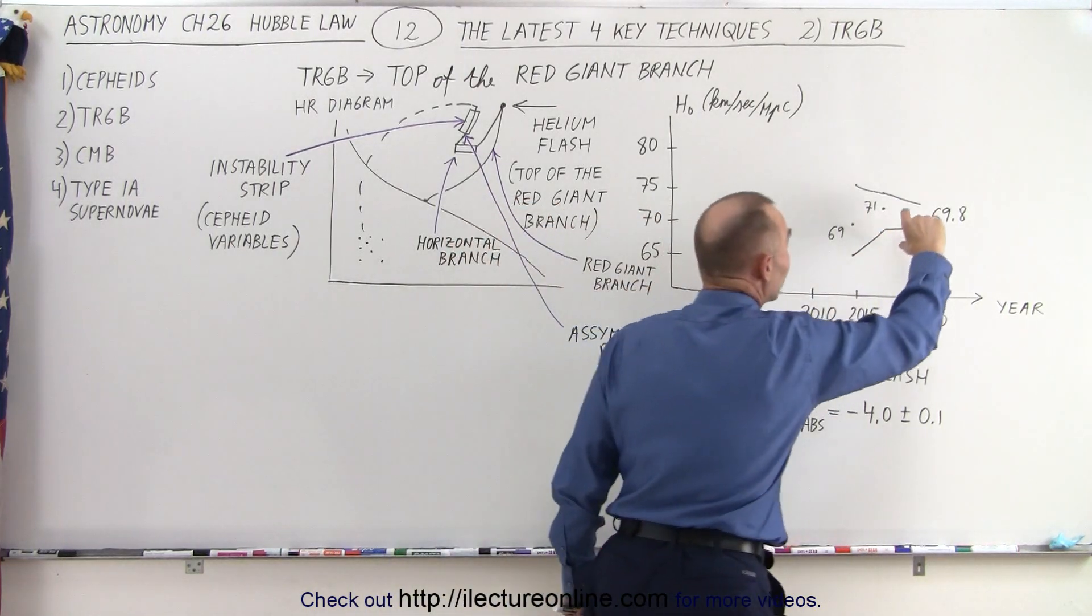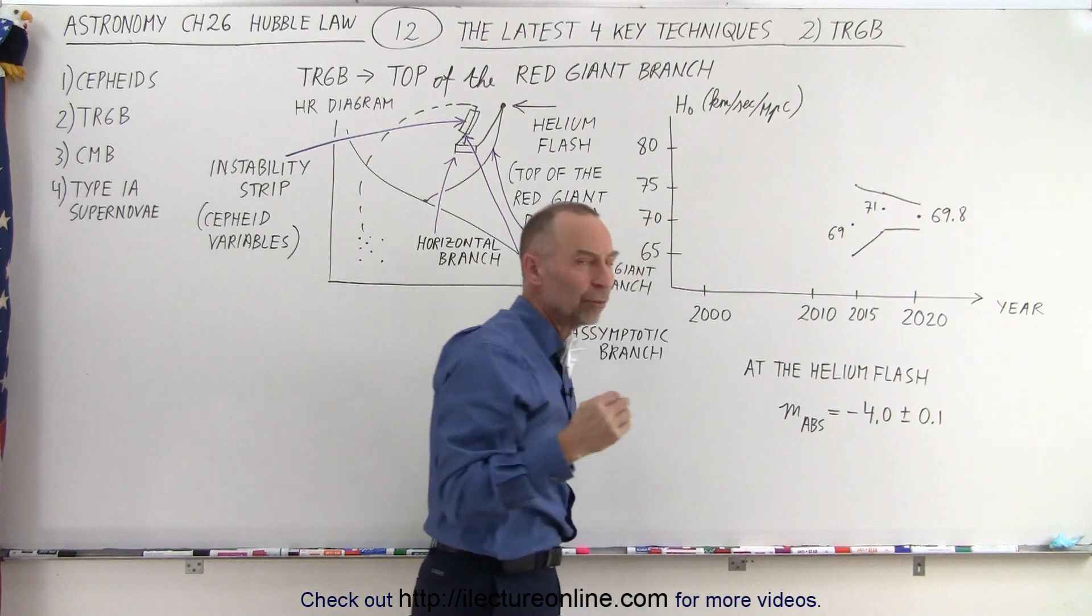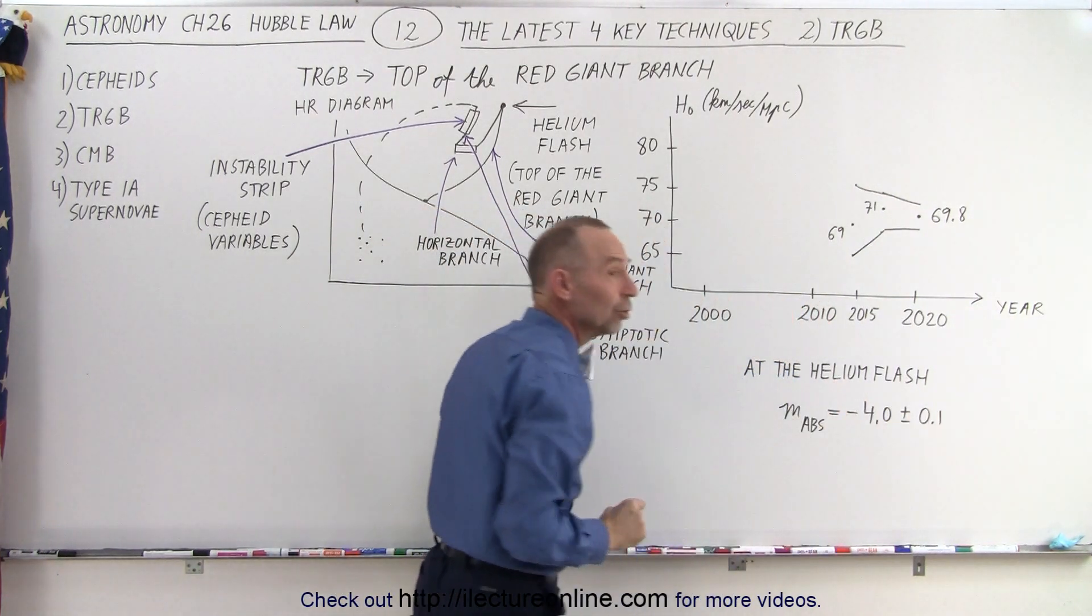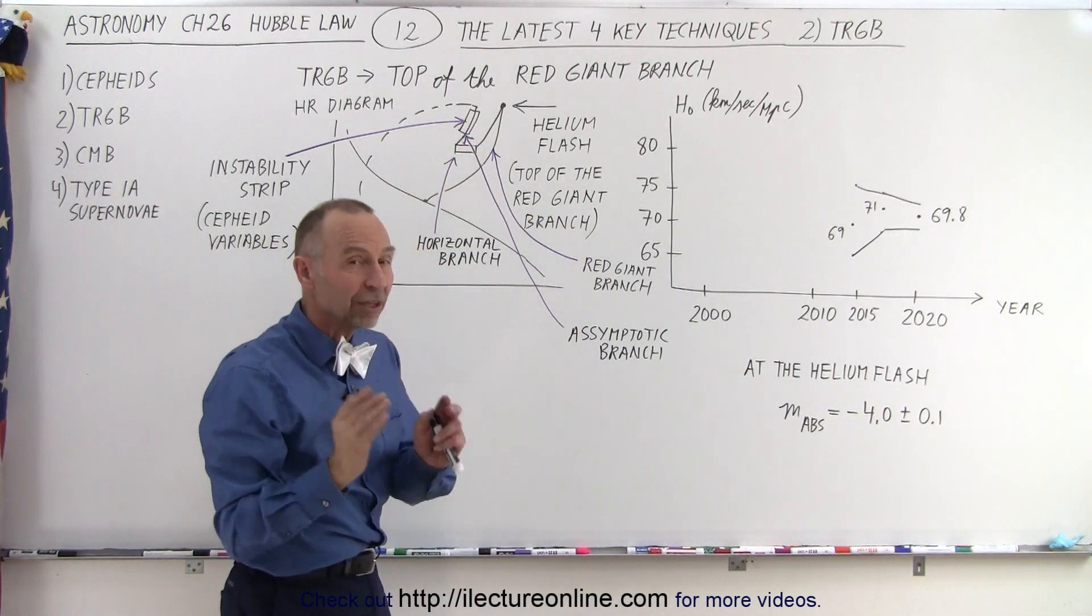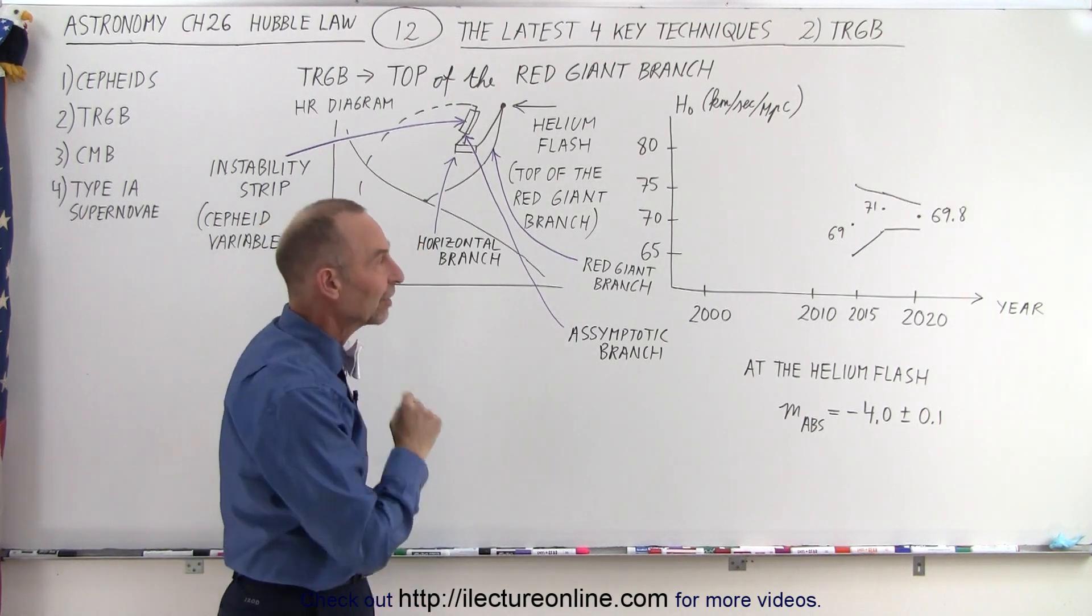And notice, the very important part is that this range is relatively small. In other words, we're fairly certain, because of this very small uncertainty in the absolute magnitude of a red giant that is experiencing this helium flash, we can make some fairly accurate estimates of the value of the Hubble constant.